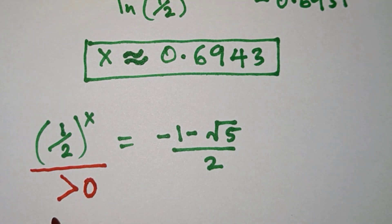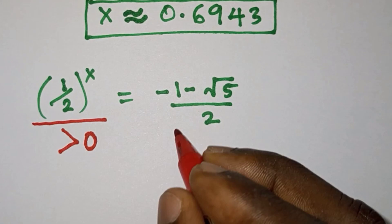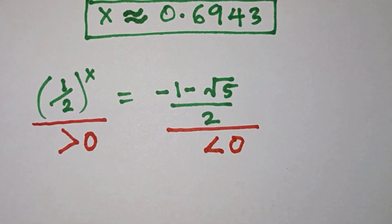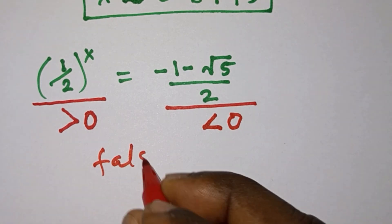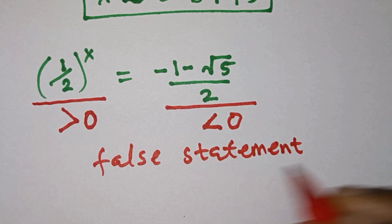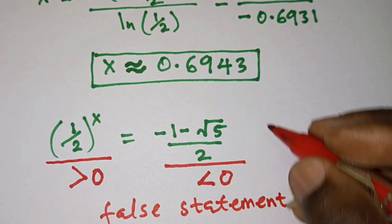Now note that (1/2)^x is greater than 0, but on the right hand side the whole expression is less than 0. So this is a false statement, so we are not going to consider this one. The final answer to the problem is x ≈ 0.6943.